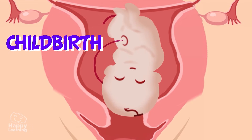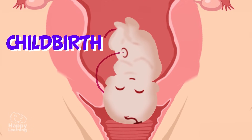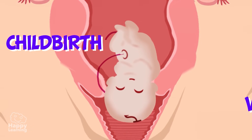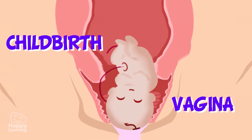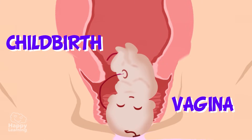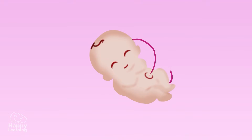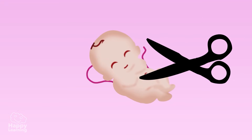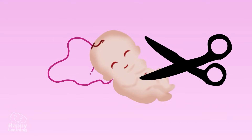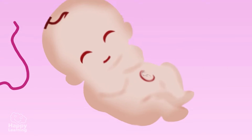Childbirth occurs around the ninth month of gestation and is when the baby exits into the world through the vagina. Normally a baby is born head first, followed by the rest of its body. After birth, the umbilical cord is cut — and the scar that is left is our belly button!